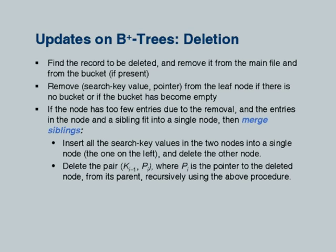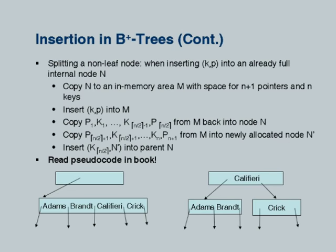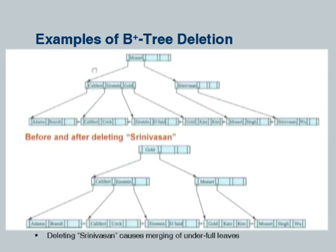That was for insertion. Now let's discuss deletion. I will cover it using an example: before deleting Srinivasan, I want to delete Srinivasan from the tree. I use the usual search technique — Srinivasan is greater than Mozart, so I follow that side; Srinivasan is not less than Srinivasan, so I follow that side — and I find Srinivasan and delete the entry from that leaf node. That was easy, but there is a problem: the node now has too few values.